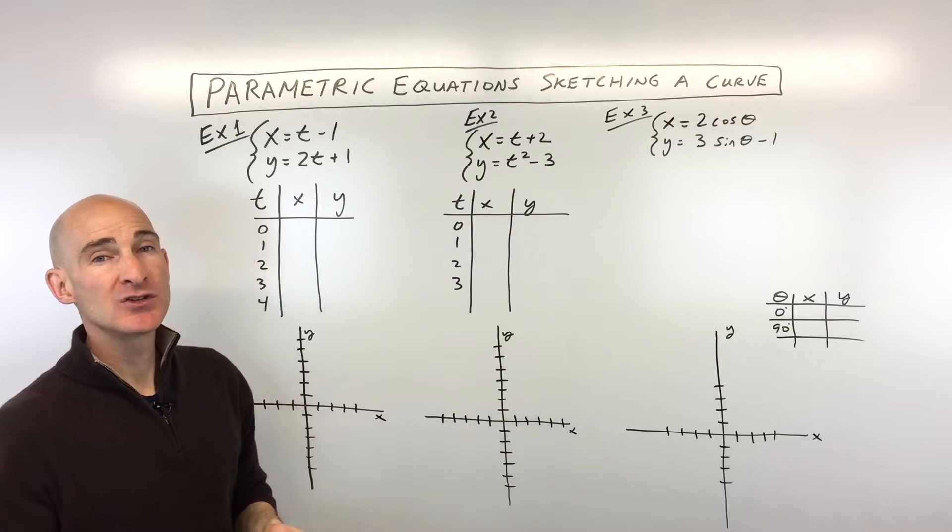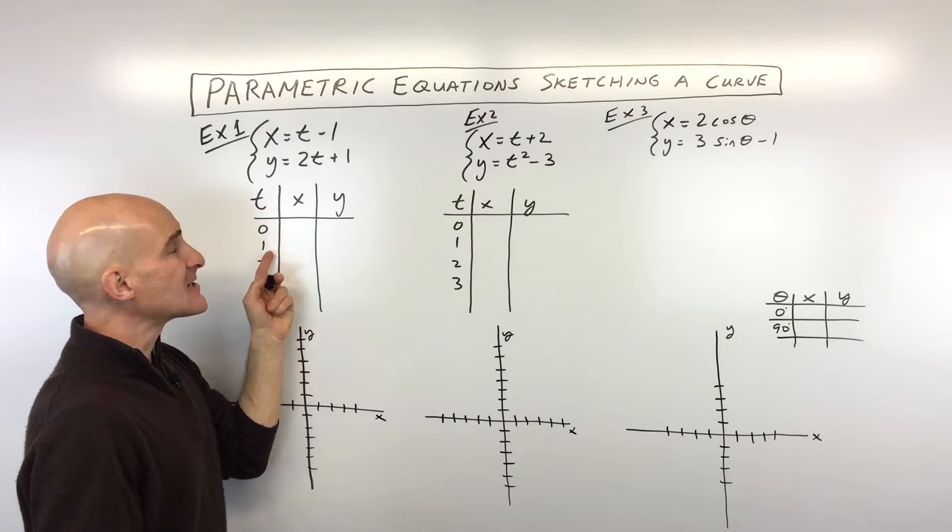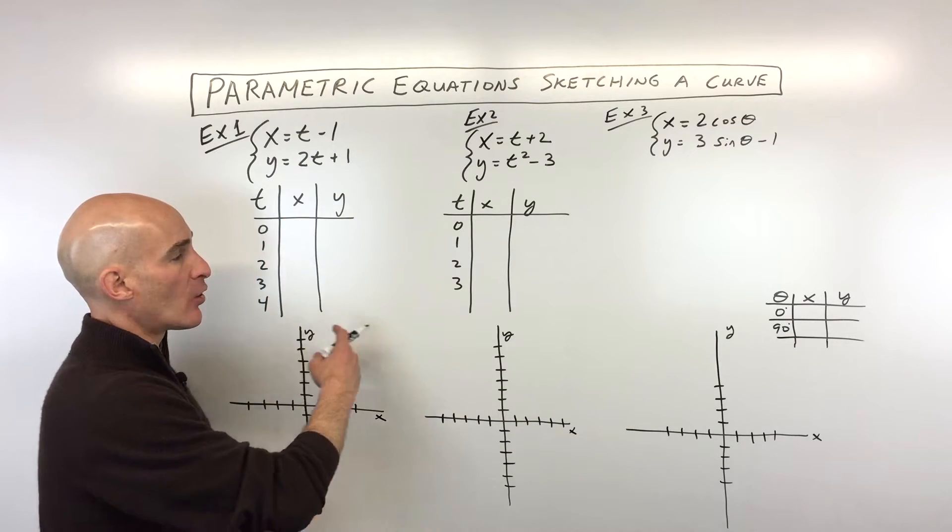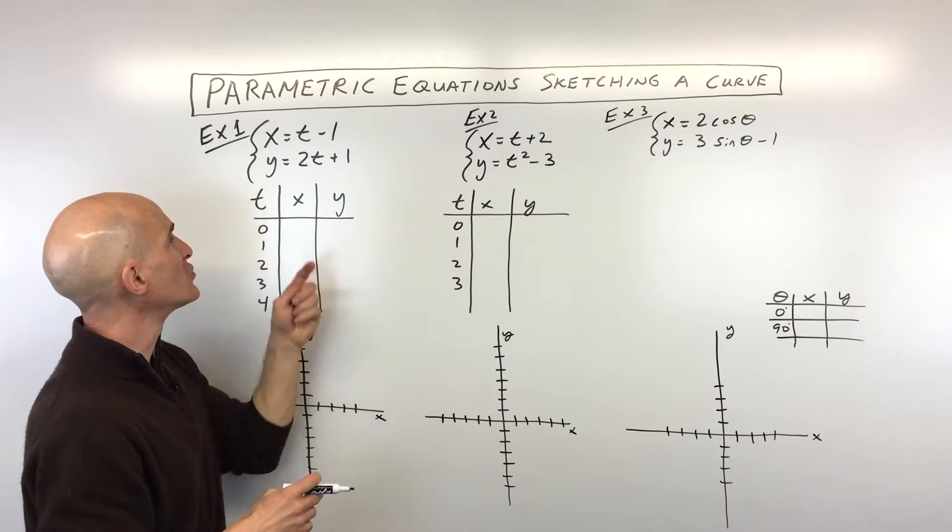There's a couple different ways to approach this. One way to do this is to make a table in terms of the time. So t you could think of as like time, and the x is really the horizontal direction, the y is the vertical direction, and what we're doing is we're splitting those equations into two parts.